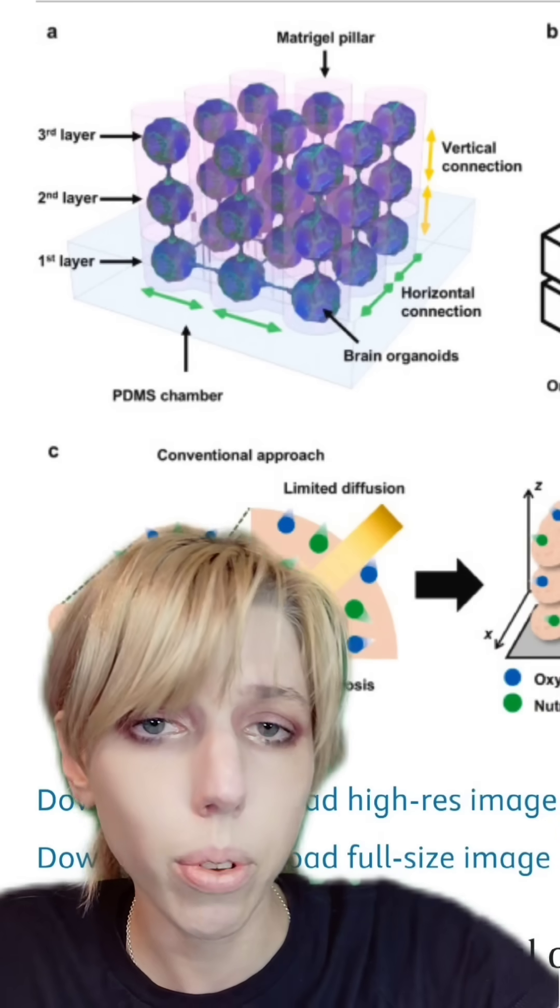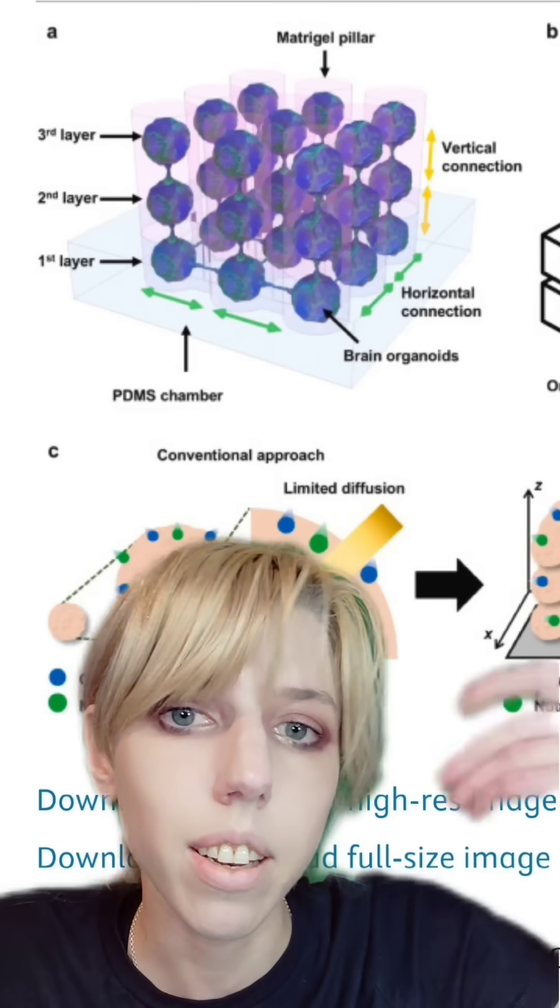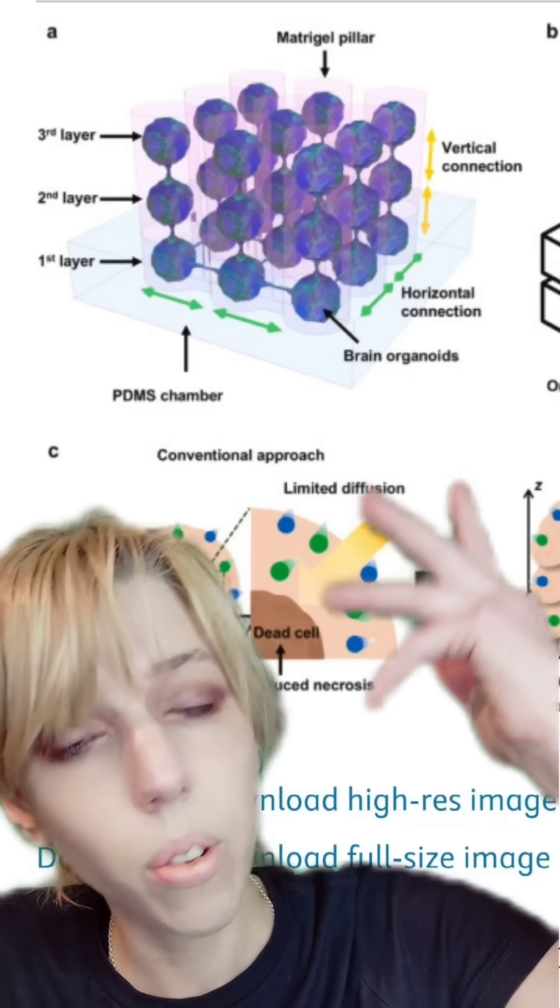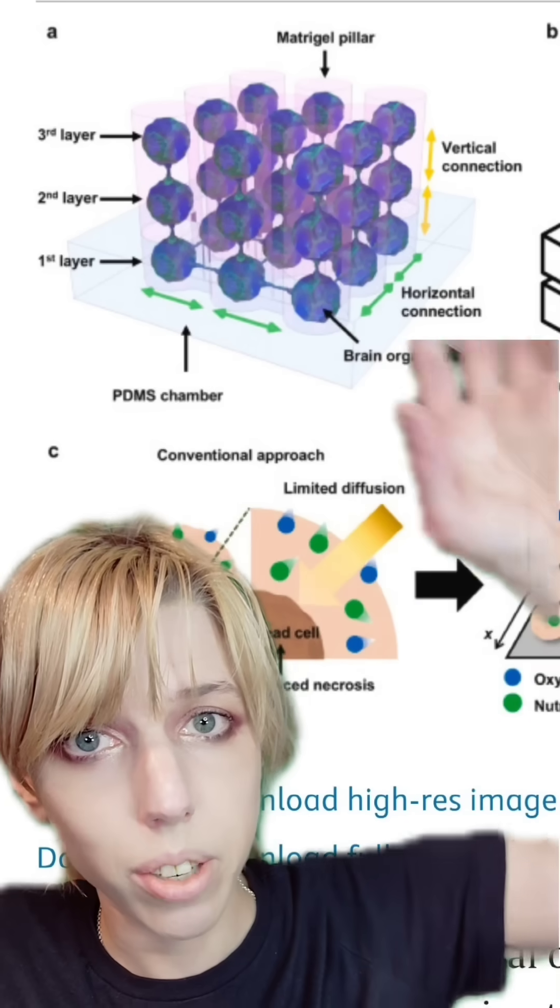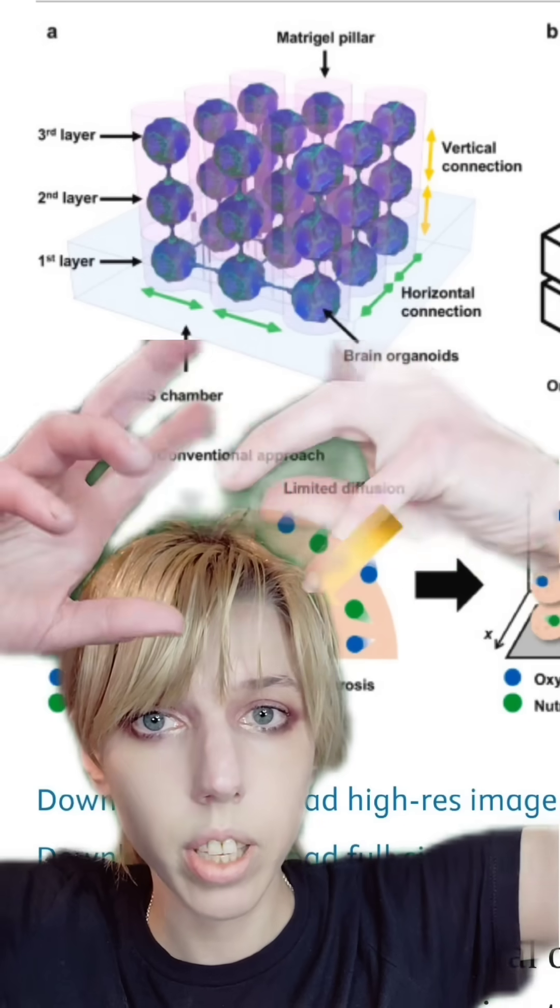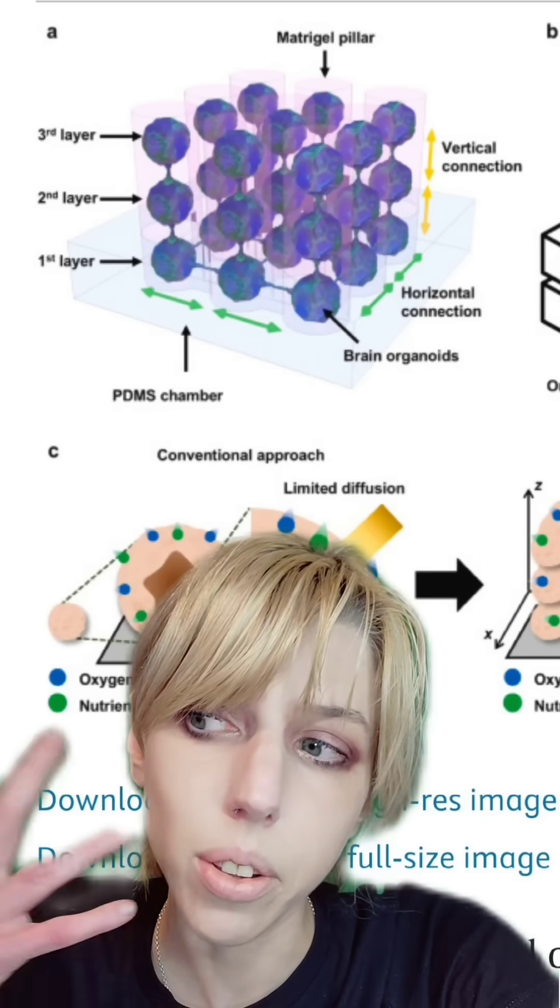Largely what brain organoids have been useful for is medication testing and development. This kind of structure could allow you to get a lot of information from just one little cube. Or it could be used for computation.